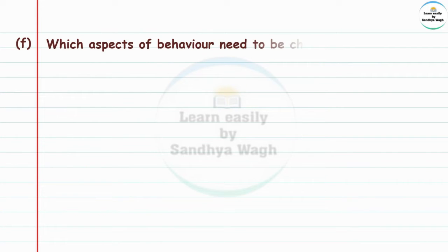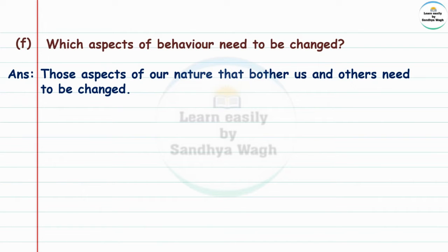Next: Which aspects of behavior need to be changed? Aspect means a facet of our nature, behavior means our conduct. Answer: Those aspects of our nature that bother us and others need to be changed. Bother means to cause stress or discomfort.